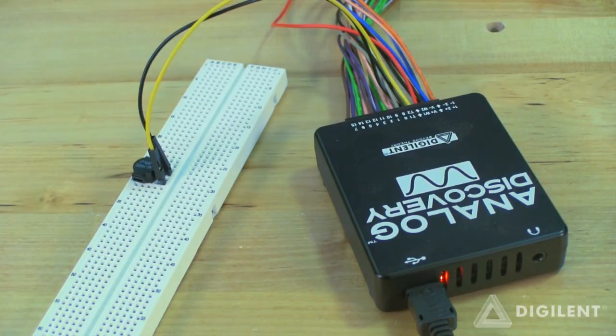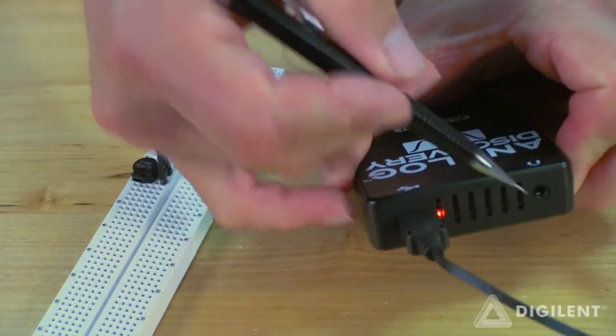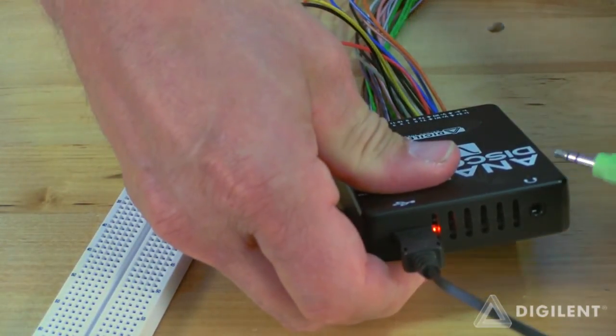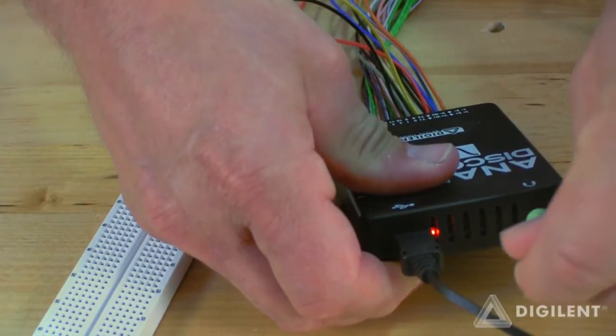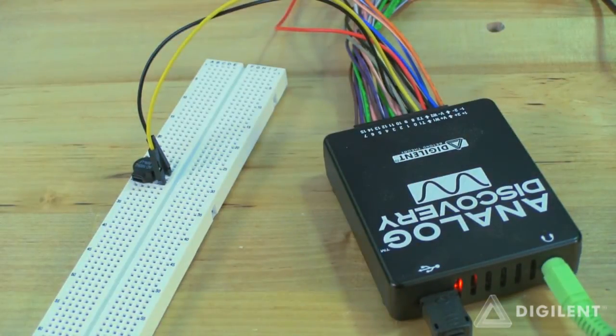This isn't the only way we can implement our circuit. There's also a headphone jack on the back of the analog discovery. If we want, we can plug some headphones into this jack, then the waveform generator is internally connected to the speakers in our headphones according to the previous circuit schematic.